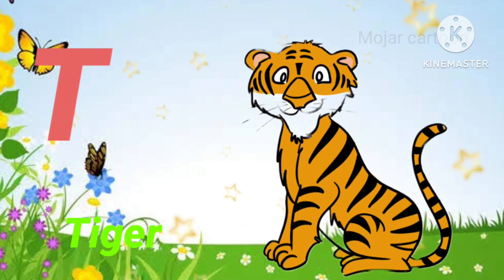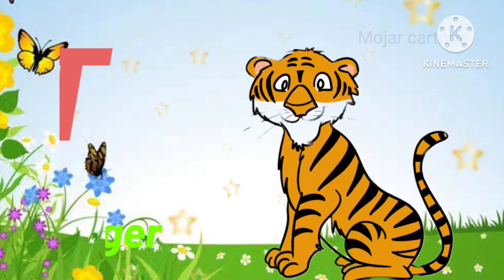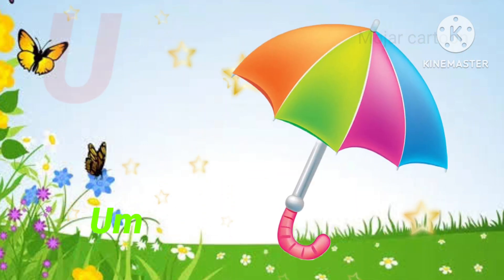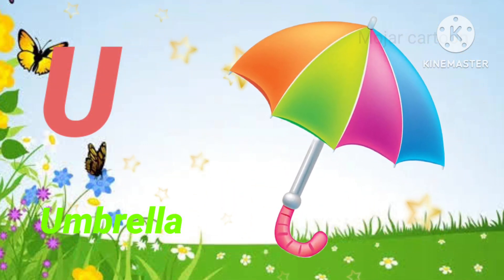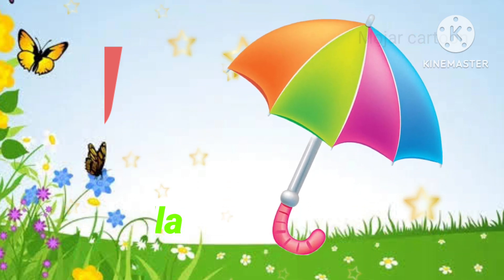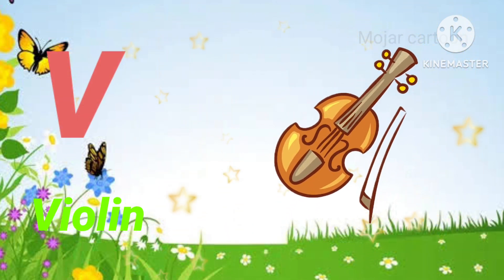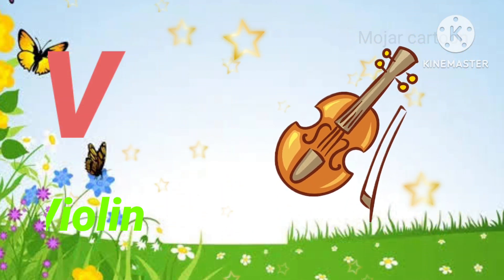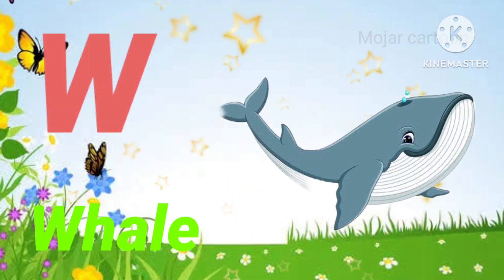T. T is for tiger. U. U is for umbrella. V. V is for violin.